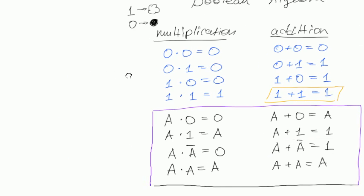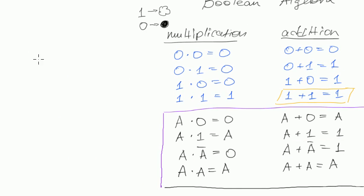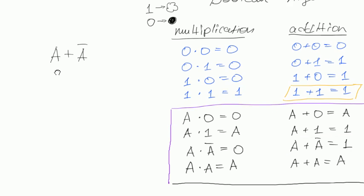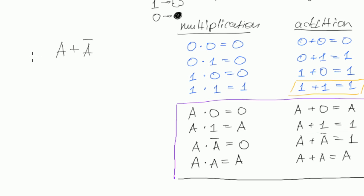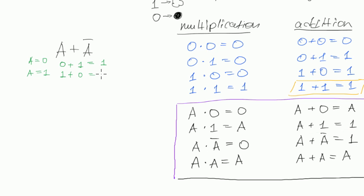And you remember how we did that? For example, we took a plus a-negated and we wanted to find out what that equals. We assumed a equals 0, so the expression would be 0 plus 1, which equals 1. Then we said what if a equals 1? Then the whole expression would be 1 plus 0, which is also 1. And that's how we knew that a plus a-negated equals 1.